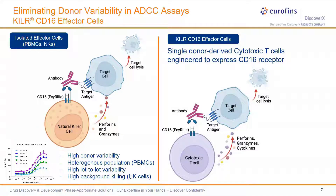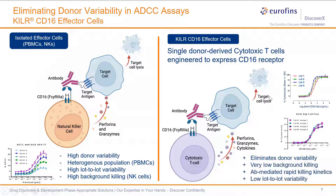To improve assay performance, we have implemented a single donor-derived cytotoxic T cell engineered to express the CD16 receptor — the same receptor expressed naturally on NK cells but not normally found on cytotoxic T cells. By expressing CD16, we're essentially able to form the same immunological synapse that occurs between the antibody and target antigen. This triggers the same release of perforins, granzymes, and cytokines normally seen with NK cells, resulting in lysis of target cells.